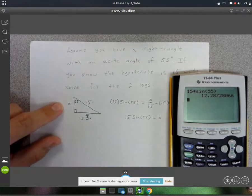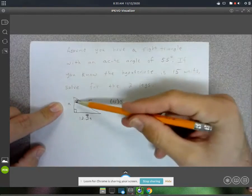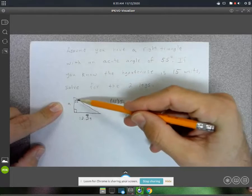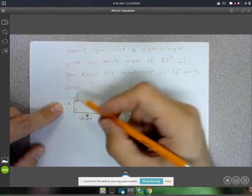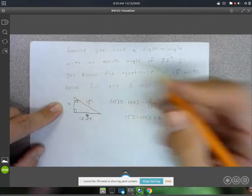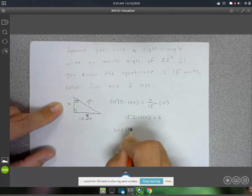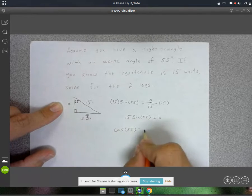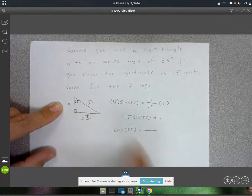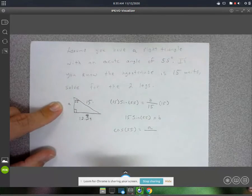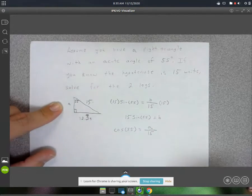Now for solving for A, at this point I can either use tangent of 55 or I could use cosine of 55. I'll use cosine. So cosine of 55, that's going to be adjacent, which is the side connected to the 55 degrees, so that's A over the hypotenuse. Cosine is adjacent over hypotenuse.